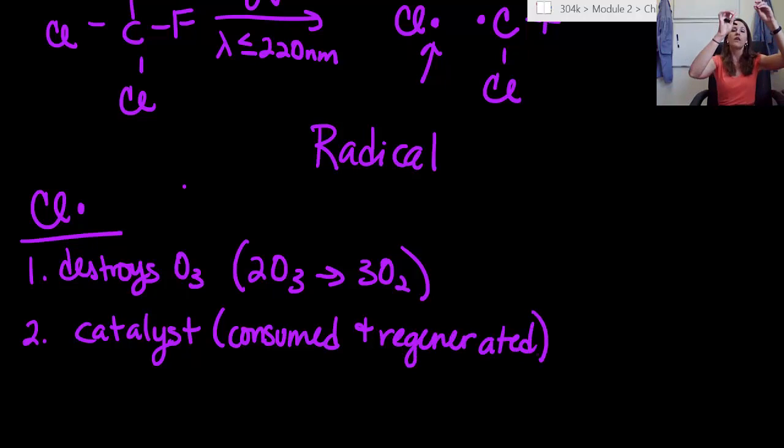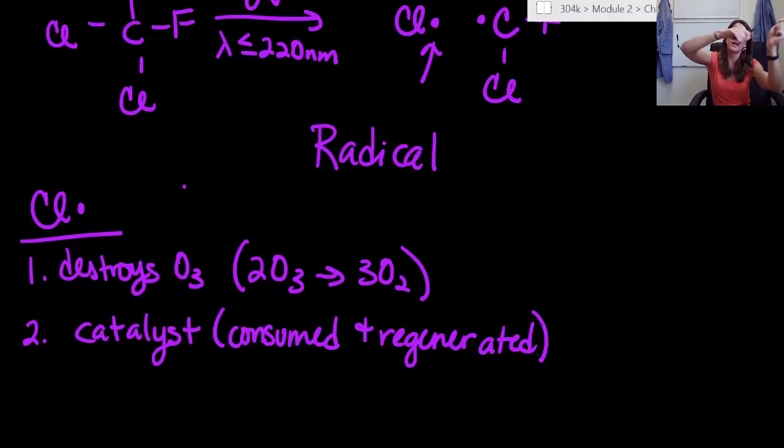Now, that means they are used up in the very beginning. So here they are as a reactant. They react with ozone. A lot of stuff happens. So this big mechanism, at the very end, it spits out oxygen, but it also creates another chlorine radical.